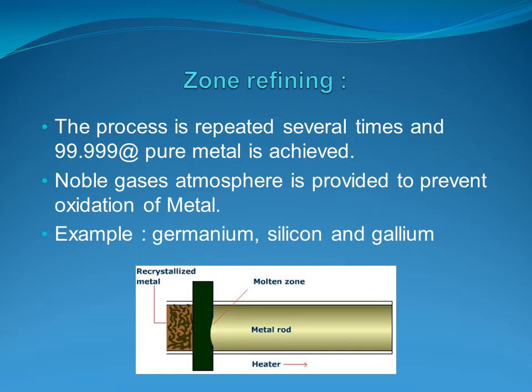The impurities move towards the molten region. As the heating unit is moved to the other end of the rod, impurities also slowly move towards the same end, that is towards the molten end. This process is repeated several times until a purity of 99.999% — a purity of five nines — is achieved. The end portion is impure and can be rejected. A noble gas atmosphere is provided during the process in order to prevent oxidation of the metal.